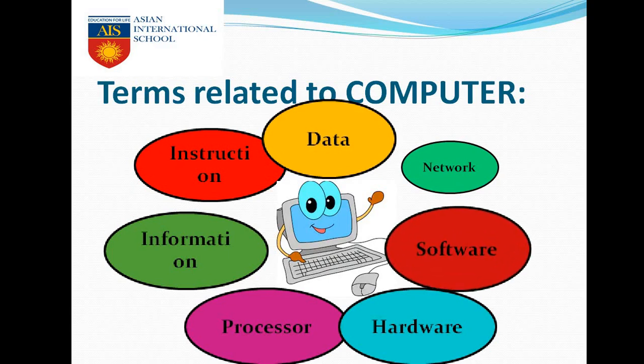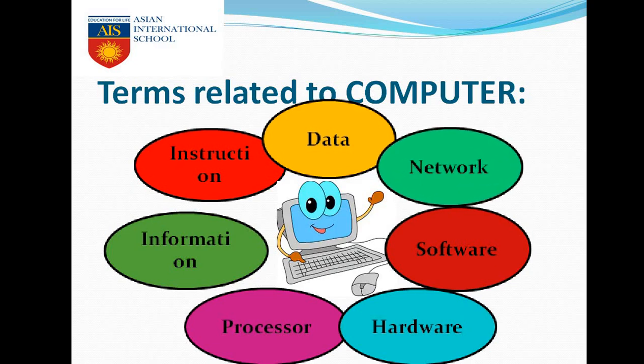Now, software. Software is a set of instructions which help the computer to perform our task very quickly. Next is network. The purpose of a network is to connect more than one computer together. Say five computers are connected together — that is our network. By using that network, those five computers can share their information among each other.